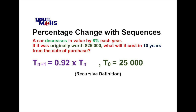If we use the calculator to go through the sequence over a series of terms and get to t10 — in other words 10 years later — we'll find out the value is $10,859.71.